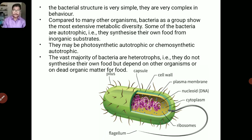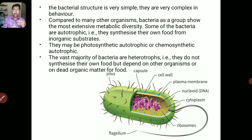The bacterial structure is very simple, but they are complex in behavior compared to other organisms. The bacteria show the most extensive metabolic diversity. Some bacteria are autotrophs — they can prepare their own food from inorganic substrates by using sunlight, as they have photosynthetic pigments. They may be photosynthetic or chemosynthetic. They prepare their food by photosynthesis using sunlight. As chemosynthetic organisms, they prepare food by oxidizing certain substances like nitrates and ammonia.